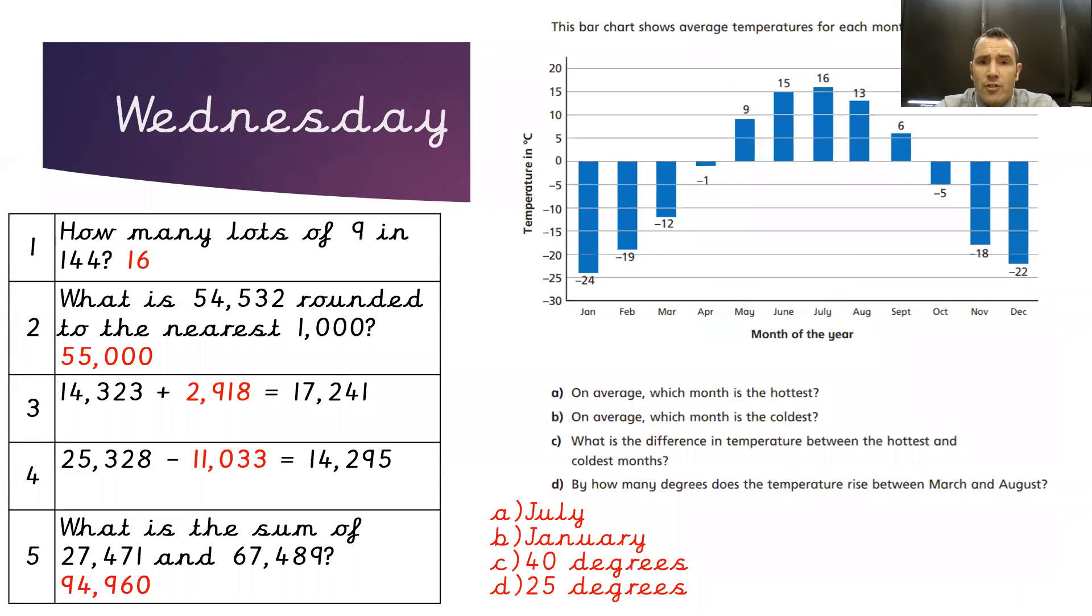On average, which month is the coldest? We'd need to look for the lowest bar in this case, the one that goes down the furthest, and that would be January with minus 24 degrees.